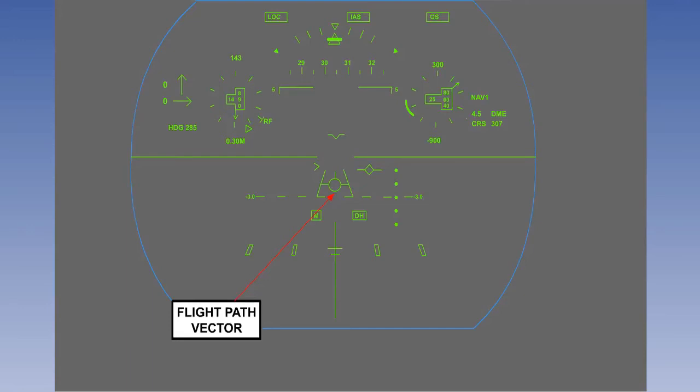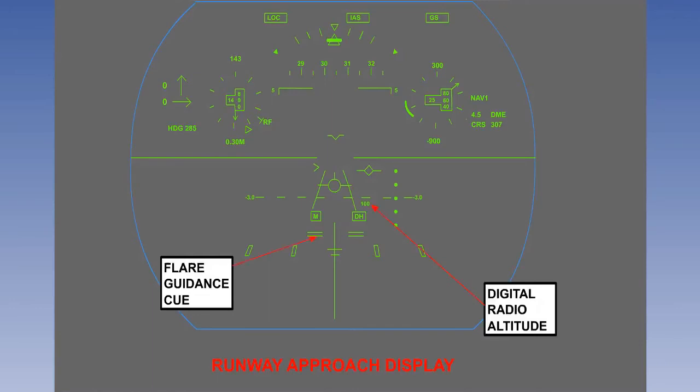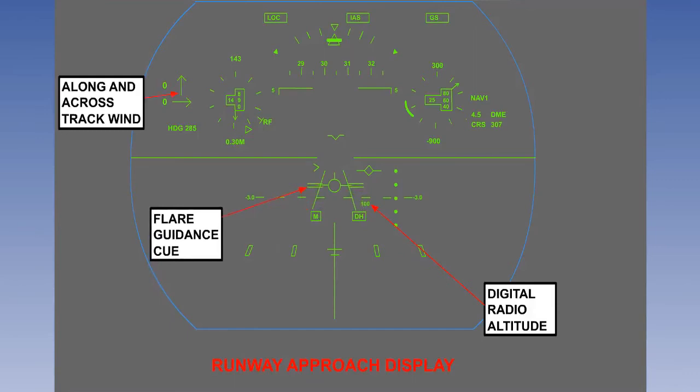The airport symbol changes to a runway symbol as the aircraft descents through 325 feet. And below 100 feet on the radio altimeter, a flare guidance cue becomes active. This moves up to the flight path vector from below until the wings of the aircraft symbol fit in between the two bars. Along and across track wind vectors can be shown. This is particularly useful during landing and takeoff.